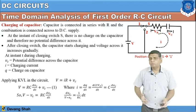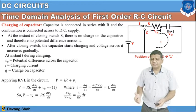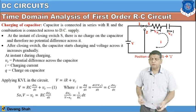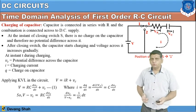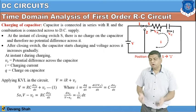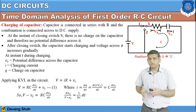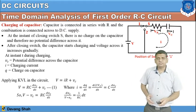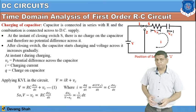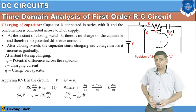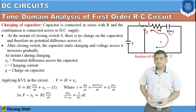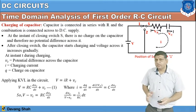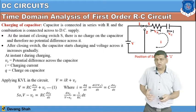Here, I is nothing but dQ/dt, and charge Q equals C·V, which is the voltage drop across the capacitor. So current I equals C·(dVc/dt). Substituting this term into equation one gives V equals R·C·(dVc/dt) plus Vc. Rearranging, V minus Vc equals R·C·(dVc/dt), and further rearranging: dVc divided by (V minus Vc) equals (1/RC)·dt.